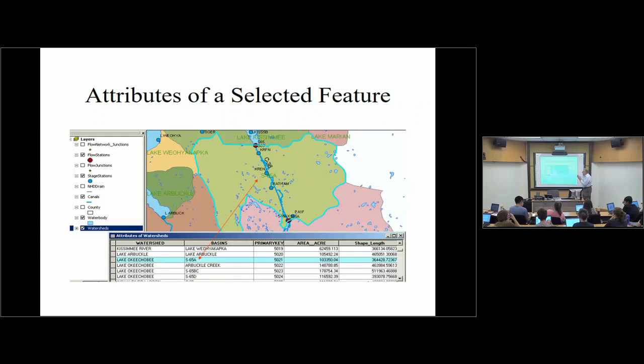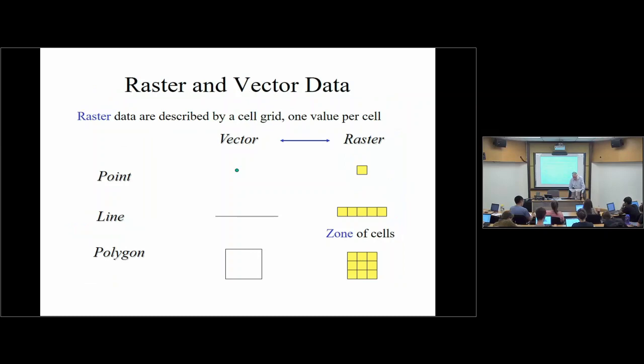Every one of these objects has associated with it an attribute table — a row in an attribute table. This feature class called Watersheds, for example the S65A watershed, has associated with it a whole series of attributes: area, shape, length, and many other things describing this particular watershed. What makes ArcGIS different from a drawing system or a database system is that a GIS has a one-to-one association between spatial features and records in a data table. That's the key innovation that separated GIS out from the pack.